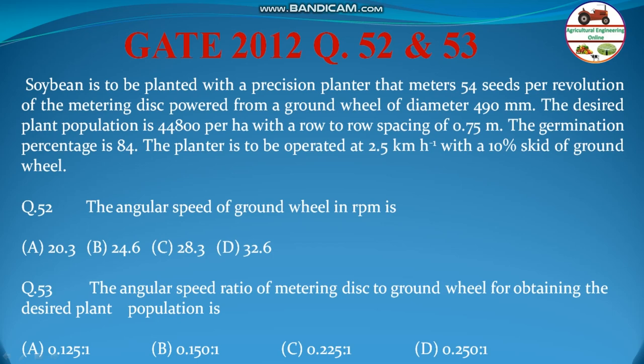Soybean is to be planted with a precision planter that meters 54 seeds per revolution of the metering disk, powered from a ground wheel of diameter 490 mm. The desired plant population is 44,800 per hectare with a row-to-row spacing of 0.75 meter. The germination percentage is 84.